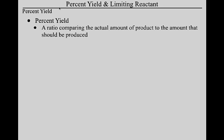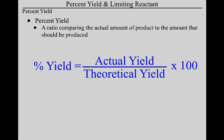Number one: percent yield. Let's define it. Percent yield is a ratio — it compares the actual amount of product that a reaction creates with the amount that it should create. It is the fraction of the amount that you did create, which we call the actual yield, divided by the amount that you should have created, which is the theoretical yield.